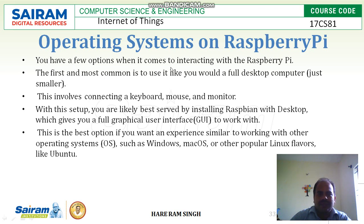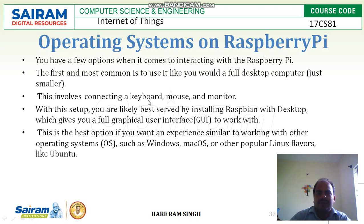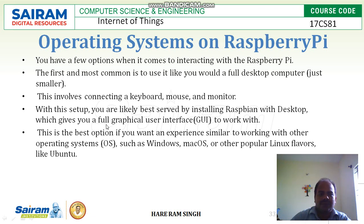You have a few options when it comes to interacting with Raspberry Pi. The first and most common is to use it like a full desktop computer, connecting a keyboard, mouse, and monitor. For this setup, you are best served by installing Raspbian with desktop, which gives you a full graphical user interface to work with.